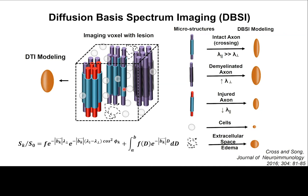For the DTI model, you have to take the average of all these effects and look at the shape and size of the tensor to guess what happened. So it is insufficient — that is why DPSI is a much better method, and I will show you how it works.